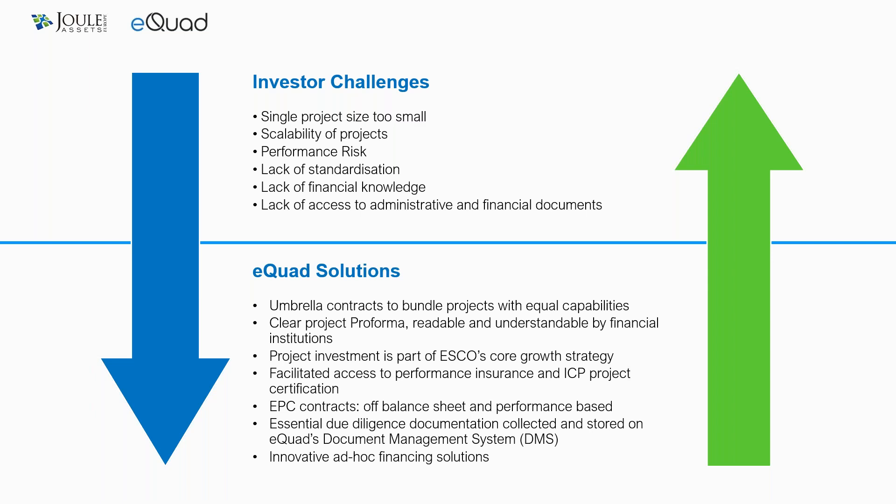How do we address these barriers through Equad? We create umbrella contracts to bundle together projects with equal capabilities, support the creation of SPV structures for these projects, offer performance risk mitigation through performance insurance when necessary, and support the correct development of EPC contracts when these are the chosen contractual structure for effective and safe performance-based projects.